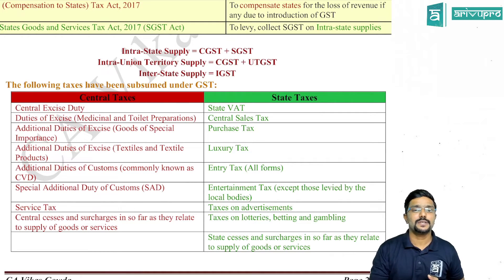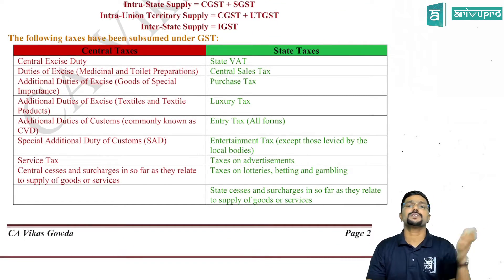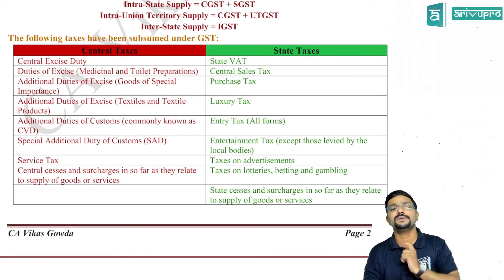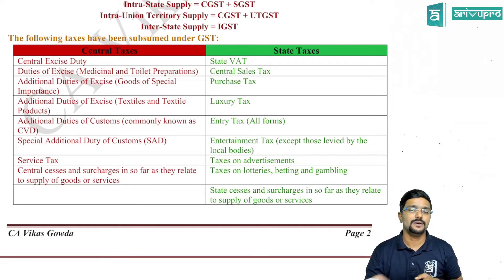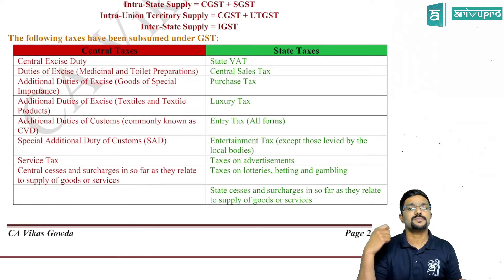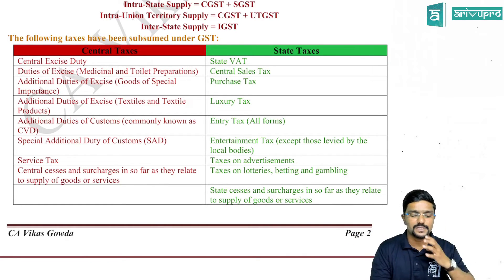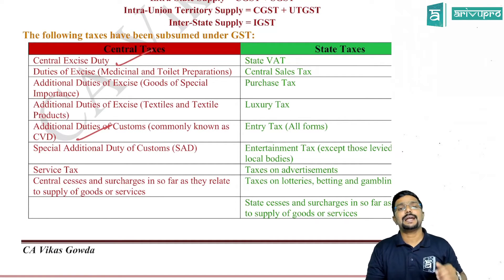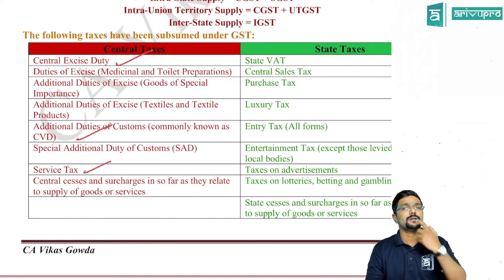Coming to the list of taxes which were levied before the introduction of GST but are now subsumed under GST: the taxes levied by the central government include central excise duty, which was levied on manufacture; CVD, which was levied on import of goods in addition to import duty; and service tax, which was levied by the central government on services provided within the state, outside the state, or outside the country.